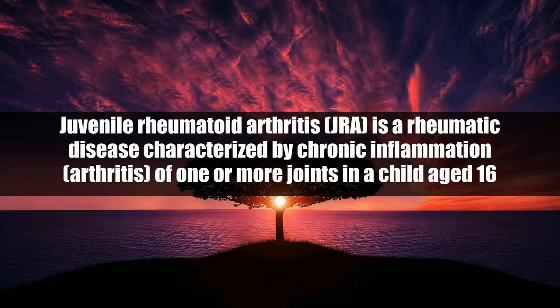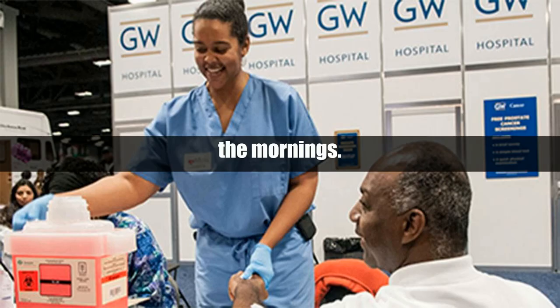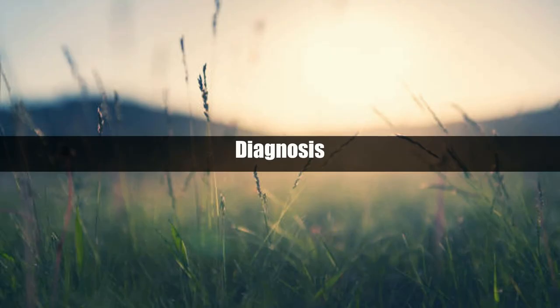Juvenile rheumatoid arthritis (JRA) is a rheumatic disease characterized by chronic inflammation or arthritis of one or more joints in a child aged 16 years or younger. Associated symptoms typically include swelling, abnormal warmth, tenderness or pain, and stiffness of affected joints that tends to be worse in the mornings.